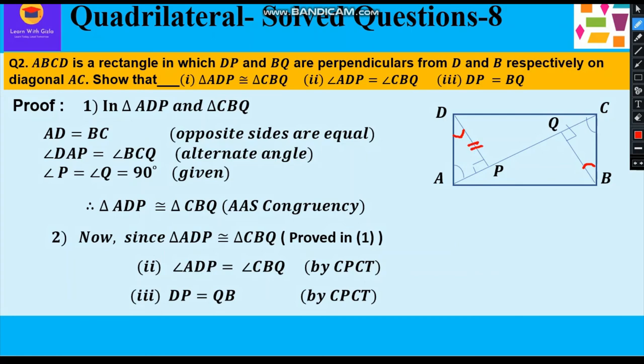Likewise, we can prove the second and the third point by saying that angle ADP is equal to CBQ by CPCT and again side DP is equal to QB by CPCT. Full form of CPCT is corresponding parts of congruent triangles are equal. There are total six corresponding parts, the three sides and the three angles.